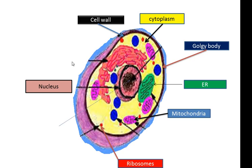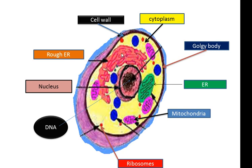The nucleus contains the genetic material, the DNA. Each human has 46 chromosomes, and each chromosome holds 100,000 genes, so each cell contains approximately 4,600,000 genes. We also have the rough endoplasmic reticulum, called rough because ribosomes are attached to it. Other organelles include vacuoles, lysosomes, and the cytoskeleton, which gives the cell its shape.